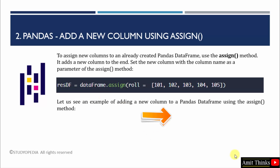In the second example, we will learn how to add a new column using the assign method. We will add a new column to an already created data frame, but the new column will get added to the end. This is the purpose of the assign method — just mention the column name and the values, that's it.